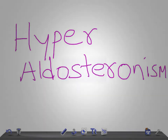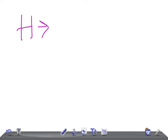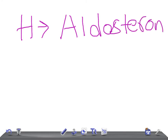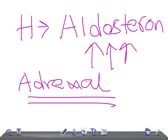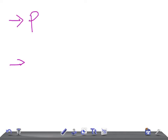Let me give you a basic idea and clear concept about hyperaldosteronism. The name itself indicates the aldosterone levels are high. Aldosterone is secreted by the adrenals — the pair of adrenal glands located over the kidneys. Hyperaldosteronism is nothing but an increase in aldosterone levels, and there are two types: primary hyperaldosteronism and secondary hyperaldosteronism.